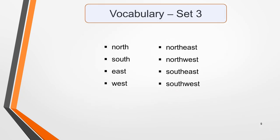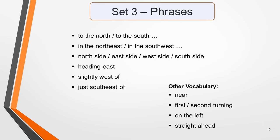Vocabulary set 3. Maps nearly always have compass points shown. You need to know the eight points of the compass as these are often used in the recording to describe locations. The eight points are North, South, East, West, North-East, North-West, South-East and South-West. There are several different ways you might hear them used.